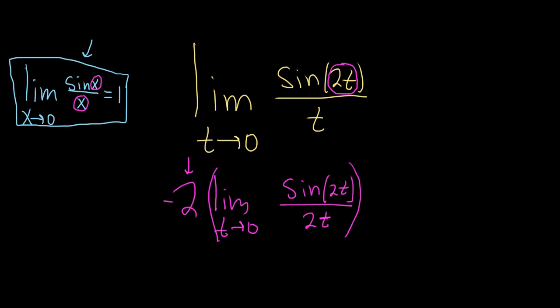So now we can use the formula because this is the same as this, and it approaches 0 because t approaches 0. So this is 2 times 1, which is equal to 2. And that would be the final answer.